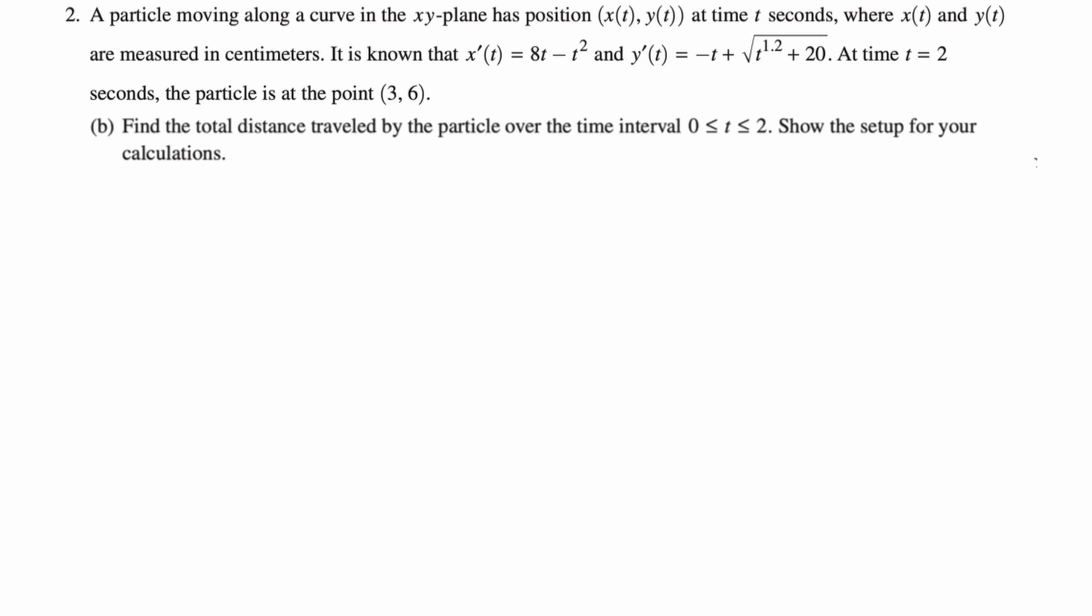Part (b): Find the total distance traveled by the particle over the time interval. That's going to be arc length. So distance is the integral from 0 to 2 of the square root of x'² + y'². You want to be careful—don't accidentally plug in the 2 from the previous problem here, especially on your calculator if you're copying and pasting expressions. That is the integral of speed, and speed is the magnitude of velocity. That's what we're doing here for total distance traveled.